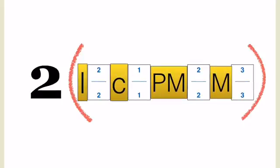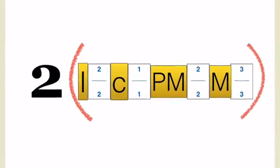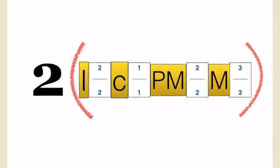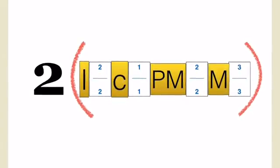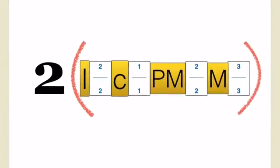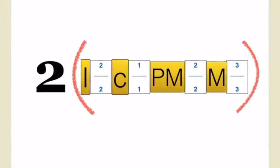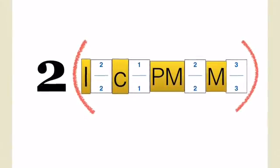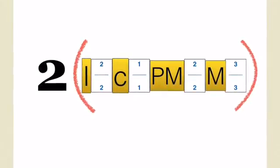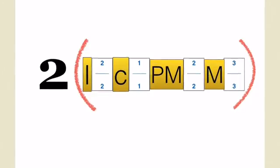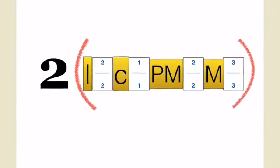So basically, to write the dental formula for my patient, I label the incisors, the canine, the premolars and the molars — top and bottom for one side only — and I put a two in front of the formula for the other side.